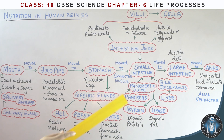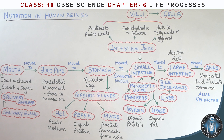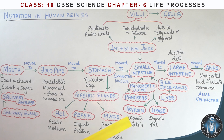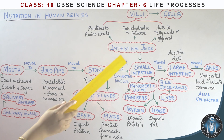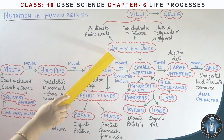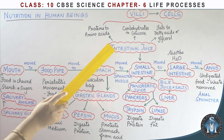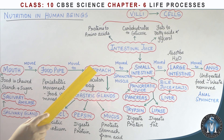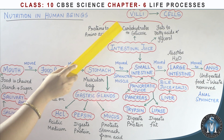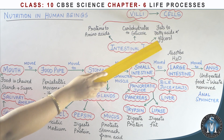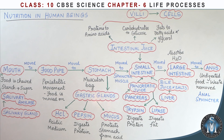The pancreas secretes pancreatic juice containing two enzymes: trypsin and lipase. Trypsin digests proteins, and lipase digests fats. In the inner lining of the small intestine, intestinal juice is secreted as the final digestion step. After this, proteins are broken into amino acids, carbohydrates into glucose, and fats into fatty acids and glycerol.